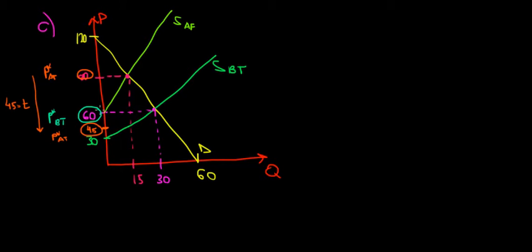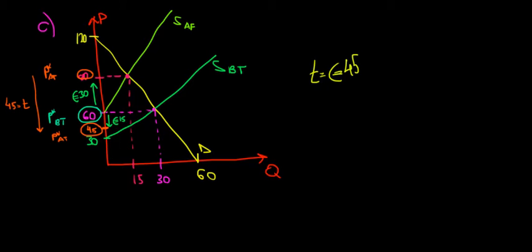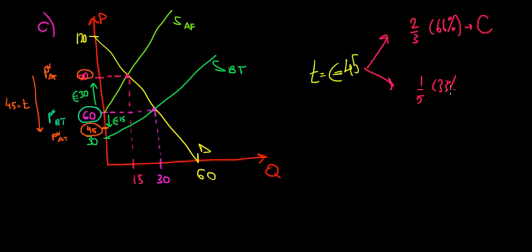How does this tax affect consumers and producers? We compare to the price before the tax. From 60 it went to 90, so consumers suffer 30 euros of the tax. Producers get 45 instead of 60, so producers get 15 euros less. Out of the 45 euros tax, two-thirds — 30 euros, which is 66% — is supported by the consumers, and the other third — 15 euros, which is 33% — is supported by the producers.